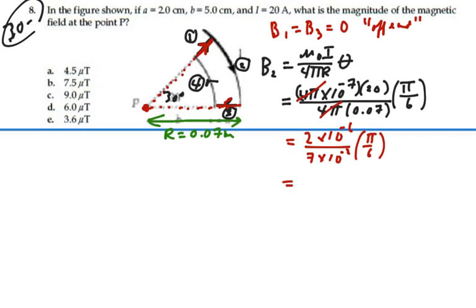We have 2 times 10 to the minus 6 over 7 times 10 to the minus 2 times π divided by 6. What is that? 1.496 times 10 to the minus 5 tesla.